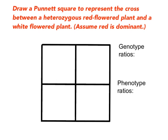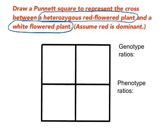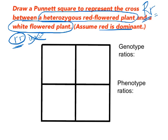Here's a practice problem. I didn't give you the actual genotypes up top — first you have to figure out what the two parents are and then determine their genotypes. We have a heterozygous red-flowered plant crossed with a white-flowered plant, and red is dominant. Heterozygous means they're different, so it must be big R, little r. The white-flowered plant can't have any dominant traits — it must be little r, little r. We use lowercase r and not w because the dominant trait gets a capital letter and the recessive trait gets the lowercase of the same letter.